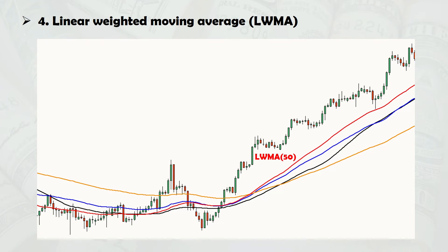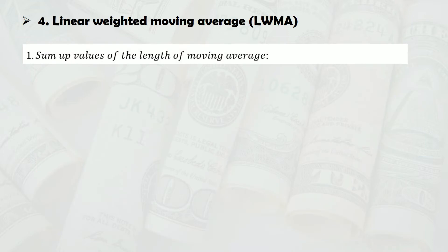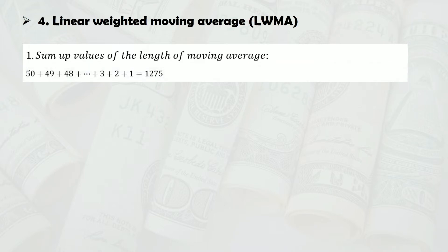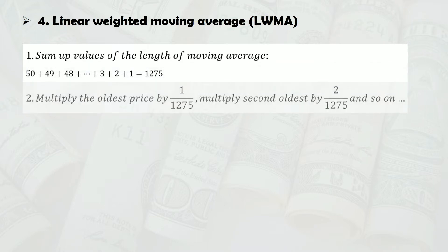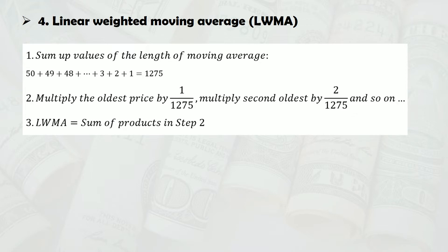Here's how the weighting for the linear weighted moving average is done: first, you find the sum of values starting from your look-back period down to one. For example, if you use a 50-period look-back, you get 12.75. You then progressively weigh each price as shown — the sum of the weightings should add up to one. Finally, you sum the products to obtain the linear weighted moving average.